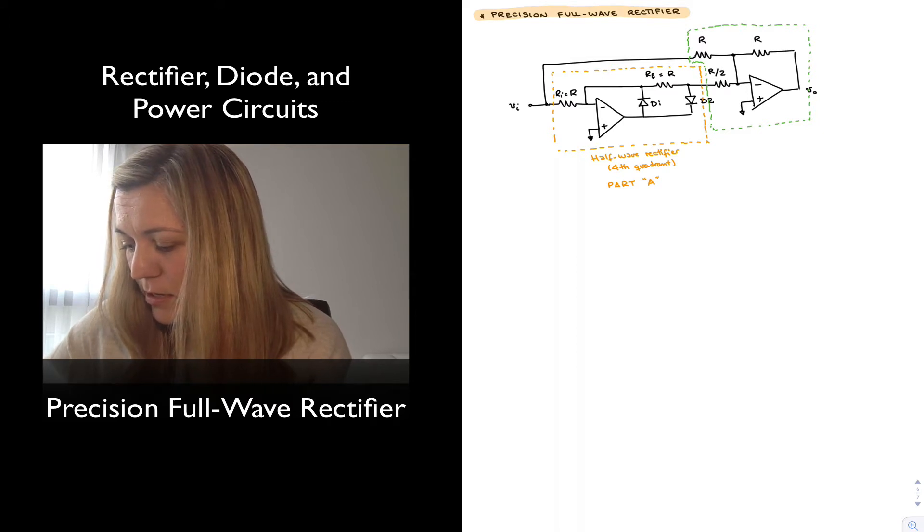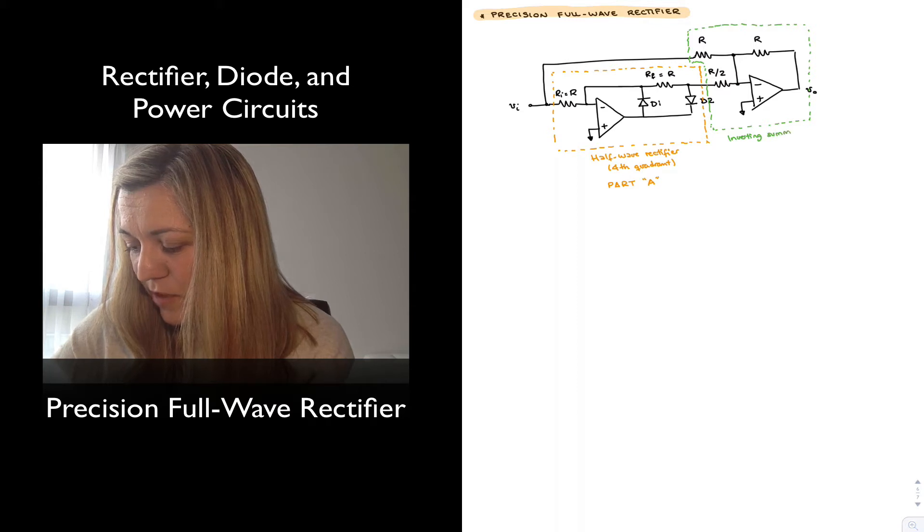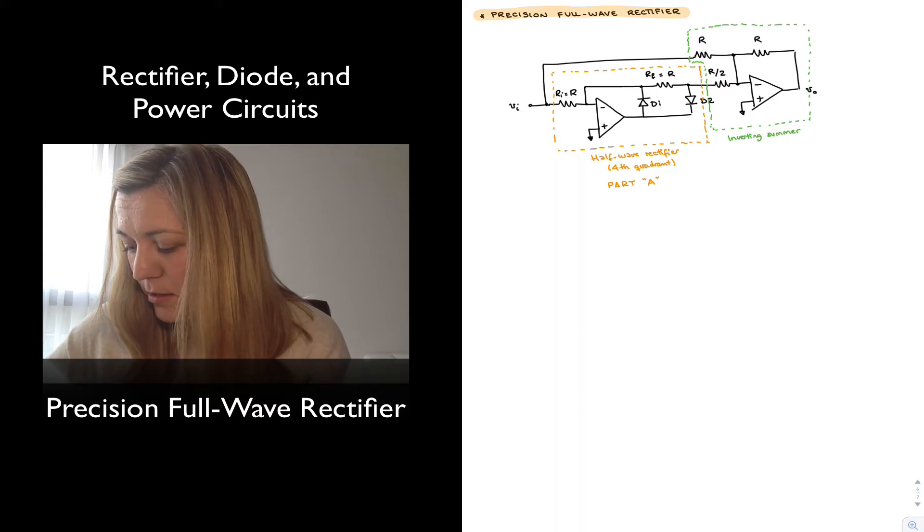The other one is the input signal coming out of our half wave rectifier, which we can give a label to. This is an inverting summing amplifier and inverting summer, which I'm going to label part B.